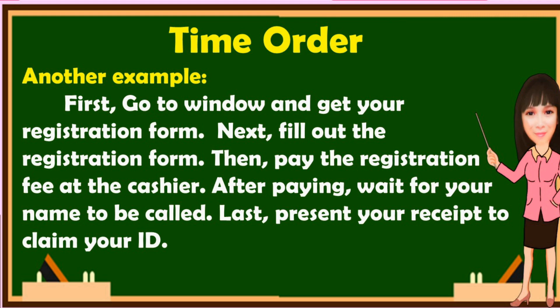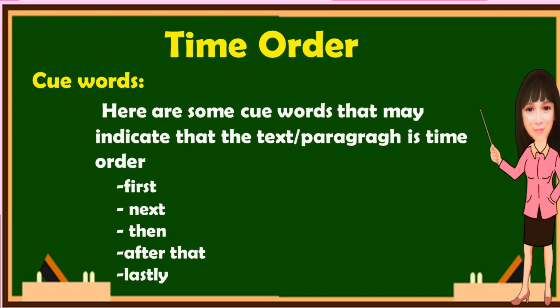Another example: First, go to the window and get your registration form. Next, fill out the registration form. Then, pay the registration fee at the cashier. After paying, wait for your name to be called. Last, present your receipt to claim your ID. You can see the sequence of events in that paragraph — it gives you direction or instruction on how to claim your ID. Keywords for time order include: first, next, then, after that, lastly.